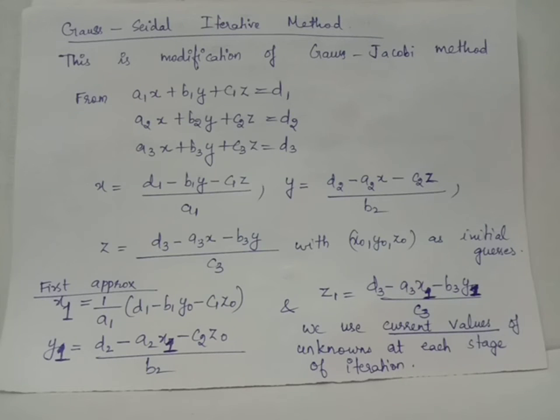Gauss-Seidel iterative method is a modification of the Gauss-Jacobi iterative method. When solving a system of linear equations using Gauss-Seidel, first check for diagonal dominance property, which says that the absolute value of the diagonally located coefficient must be greater than or equal to the sum of absolute values of remaining coefficients in each linear equation.